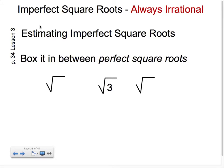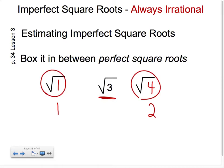How to estimate an imperfect square root? You've got to try and box it in between the perfect square roots. I know that the square root of 1 is a perfect square root because 1 times 1 equals 1. The next number up is 2, and 2 times 2 is 4, so we have boxed in our imperfect square root between two perfect square roots.